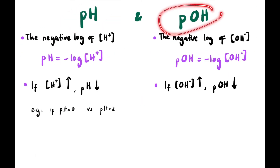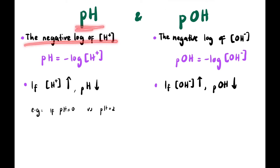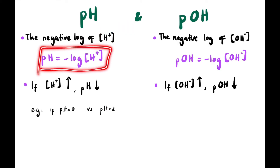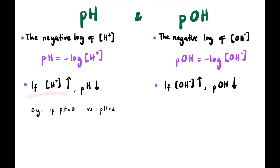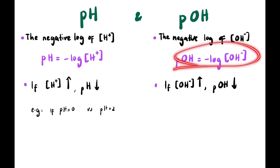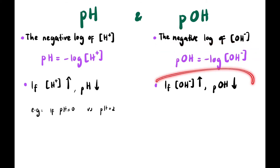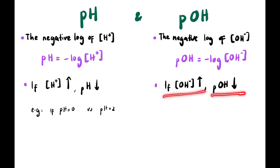pH is defined as the negative logarithm of the concentration of H⁺ ions: pH = -log[H⁺]. When [H⁺] is higher, pH is lower. Similarly, pOH = -log[OH⁻]. When [OH⁻] is higher, pOH is lower.